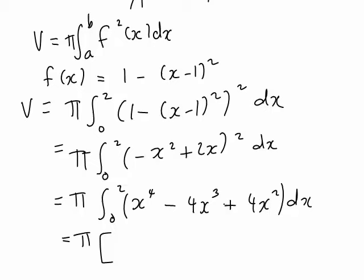The antiderivative becomes x⁵/5 - 4x⁴/4, which just becomes x⁴, plus 4x³/3. And we're evaluating that from 0 to 2.